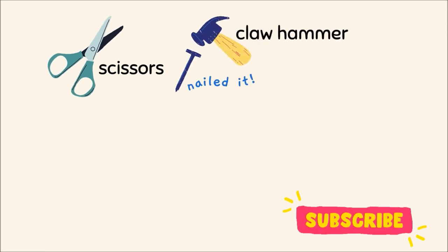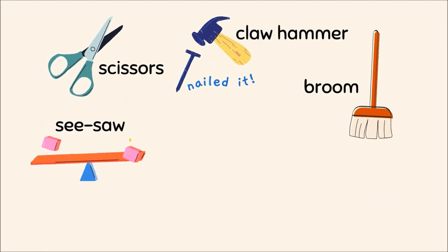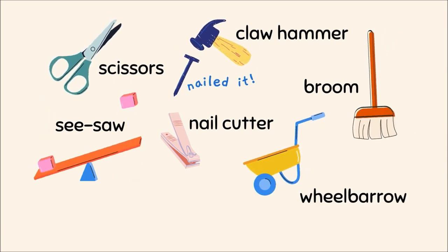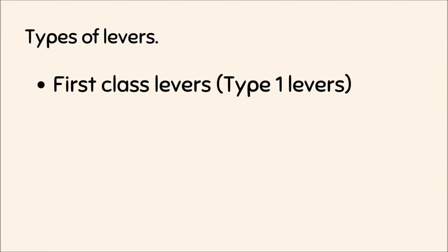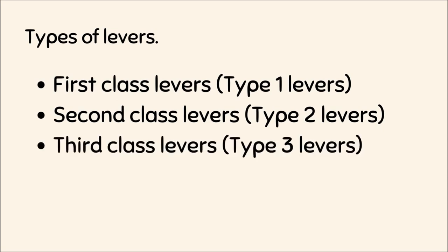Examples of levers: scissors, claw hammer, seesaw, broom, nail cutter, wheelbarrow, pliers, and knife. Types of levers: first class levers or type 1 levers, second class levers or type 2 levers, and third class levers or type 3 levers. We will learn more about levers in another video.